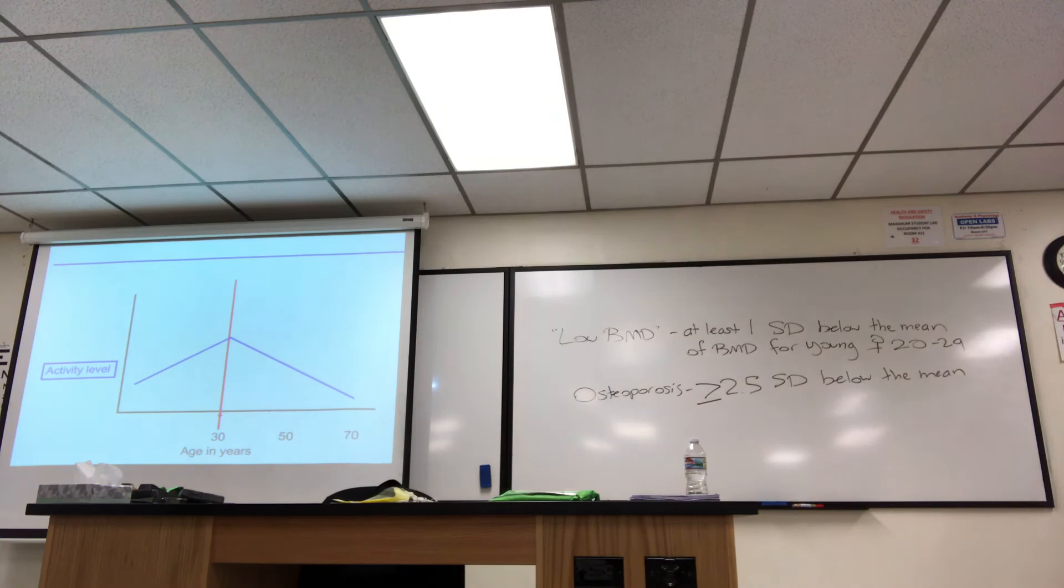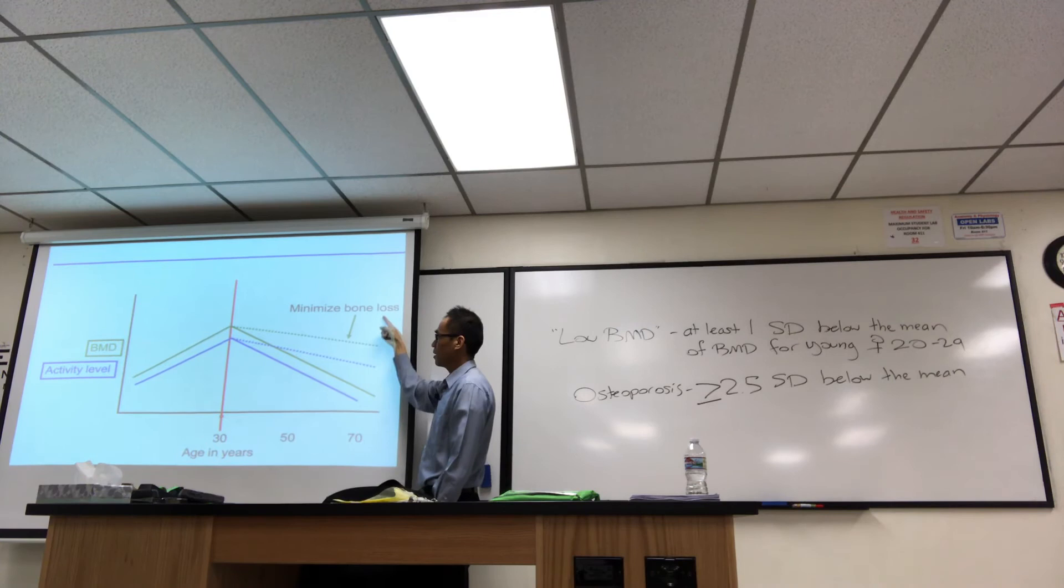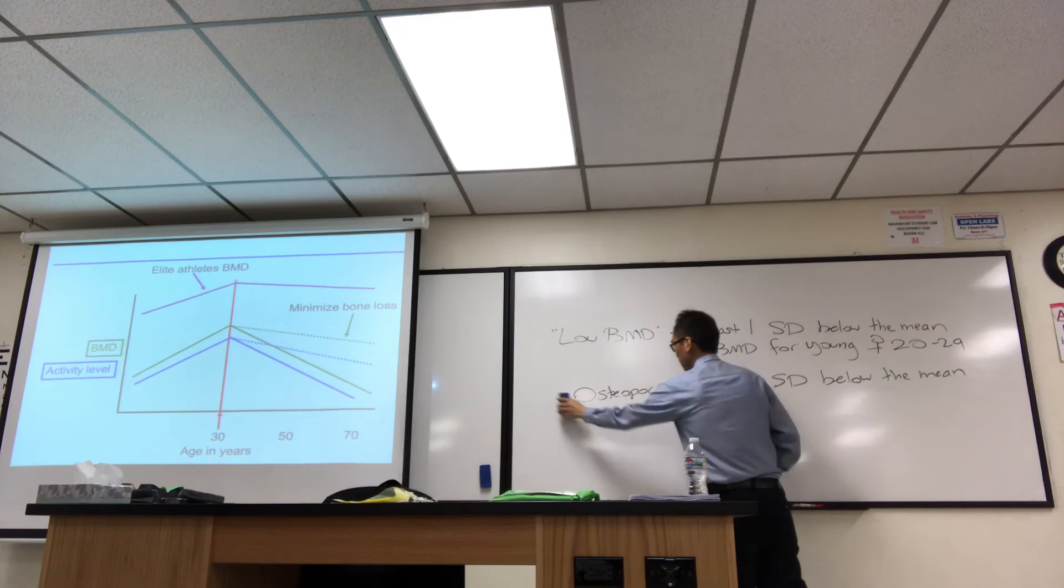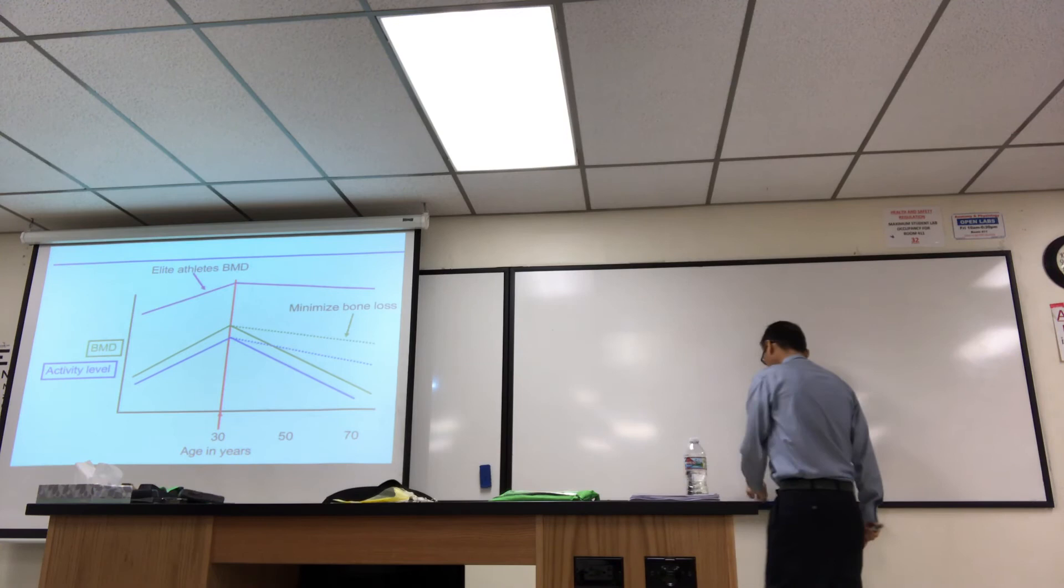Now, what you can do, if you exercise more, you increase the BMD. And whichever category of activity level you're at, if you're more physically active after the age of 30, you're just minimizing the bone loss. But again, you cannot make this continue to go up. It would just go down. Even if you're an elite athlete, your activity level, you start off much higher, but you still lose bone loss. And, yeah, it's just like putting money in the bank so that when you retire, you have something to live off of. The more money you put in the bank when you're young, as you get older, you reduce your risk for the low BMD or osteoporosis category.